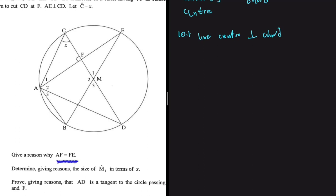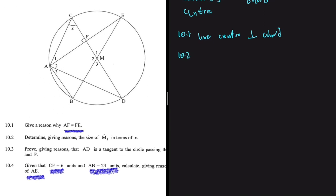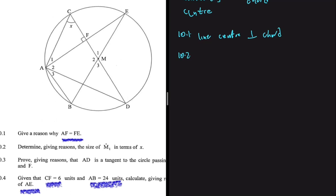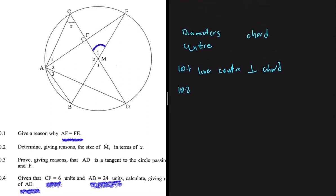10.2 says: determine, with reasons, the size of M1 in terms of x. M1 is right here. Looking at my keywords, this has nothing to do with the diameter. Going to 'center': M1 is an angle at the center and should equal twice the angle at the circumference, provided they are from the same arc. M1 is subtended by arc CE.